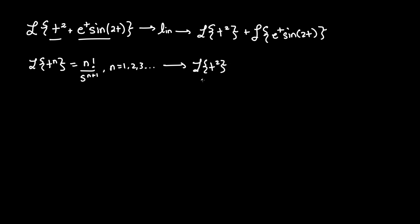we can see that n equals 2. That means that we can replace every n term with 2, which becomes 2 factorial over s to the 2 plus 1. This equals 2 times 1 over s cubed, which is simply 2 over s cubed. And that is our first part done here.